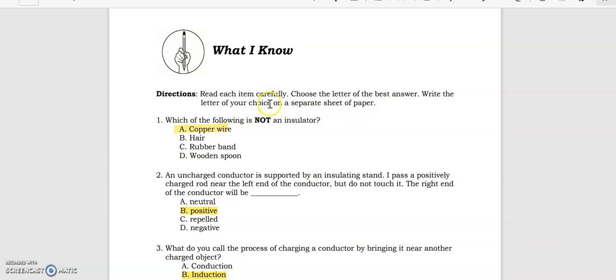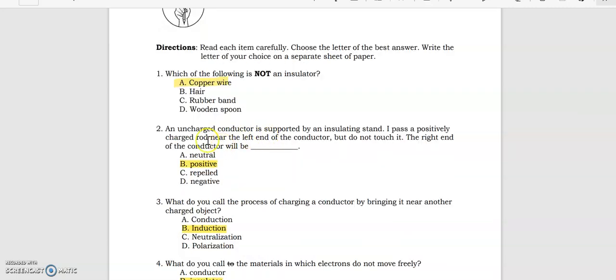Which of the following is not an insulator? It's copper wire. An uncharged conductor supported by an insulating stand. I pass a positively charged rod near the left end of the conductor but do not touch it. The right end of the conductor will be positive.